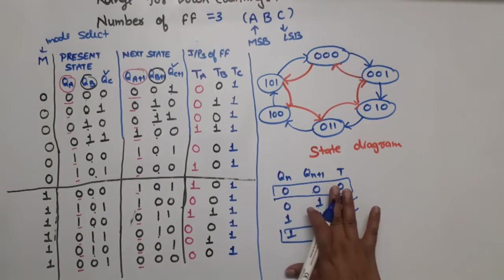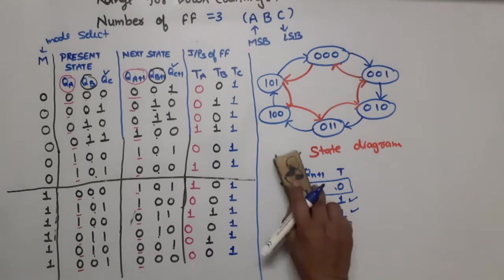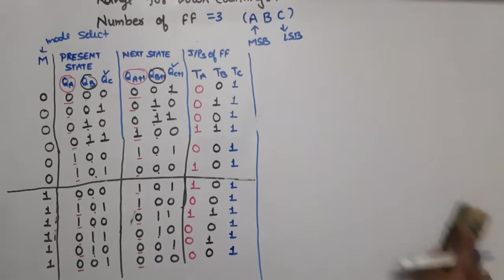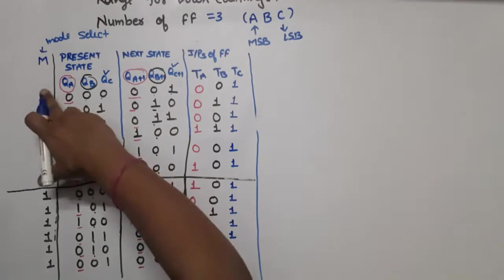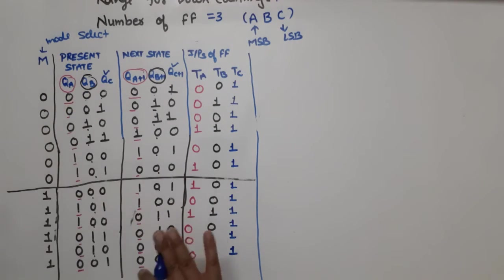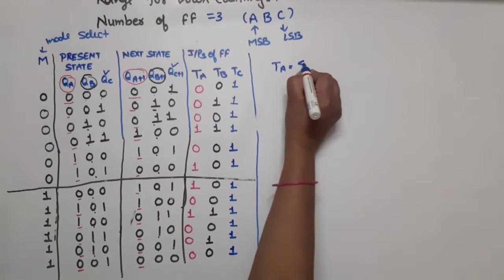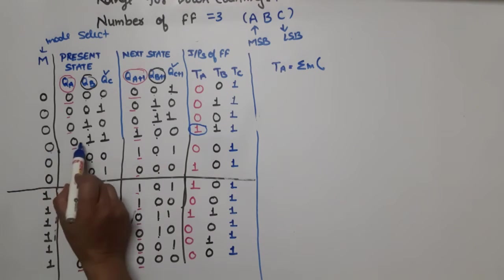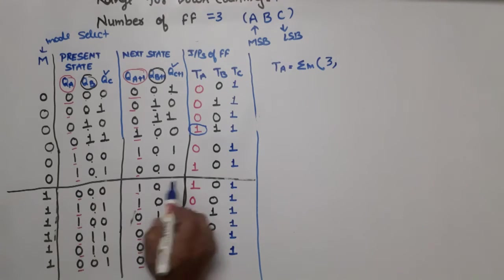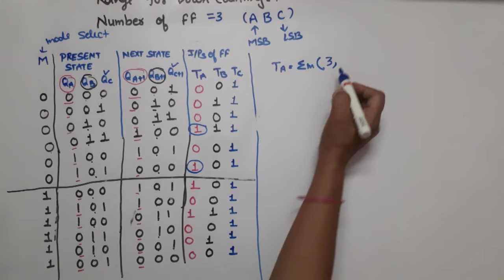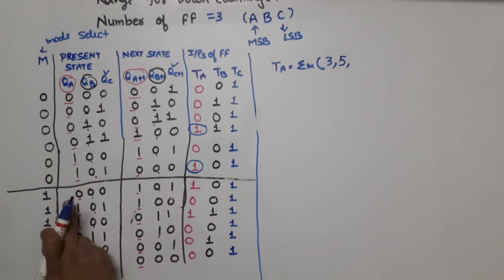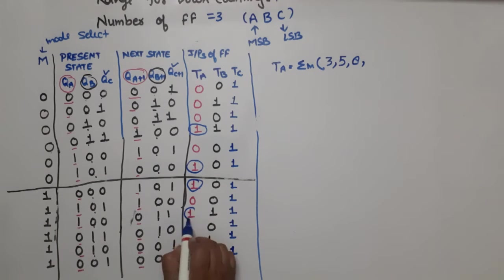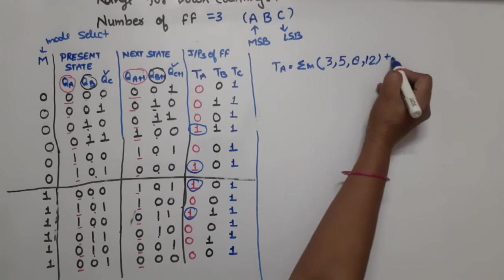Now I will write equations from the state table and then make K-maps and draw the circuit diagram. I will erase the state diagram. For TA, it equals summation m of minterms: the 1s correspond to decimal positions 3, 5, 8, and 12. For TB, the minterms are at 1, 3, 12, and 10. For TC, we check all the 1 conditions.